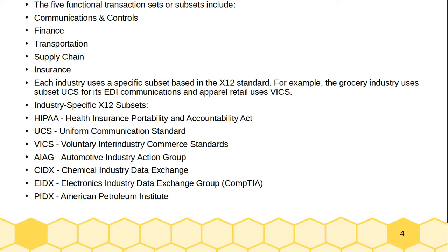For example, the grocery industry uses the subset UCS for its EDI communication, and retail uses VICS. Industry-specific X12 subsets include: HIPAA (Health Insurance Portability and Accountability Act), UCS (Uniform Communication Standard), VICS (Voluntary Inter-Industry Commerce Standard), AIAG (Automotive Industry Action Group), CIDX (Chemical Industry Data Exchange), EIDX (Electronic Industry Data Exchange), and PIDX (American Petroleum Institute).